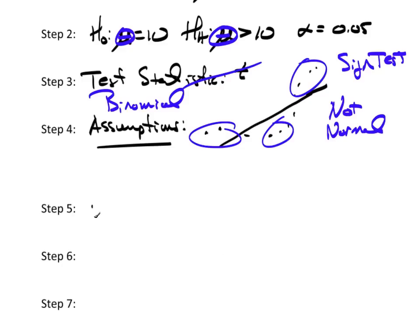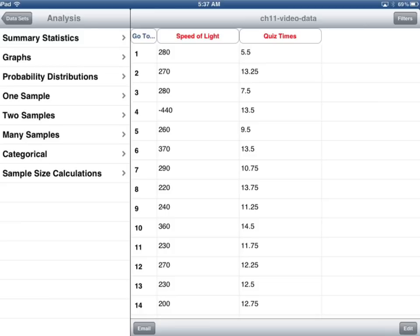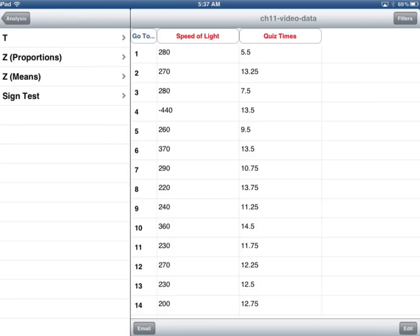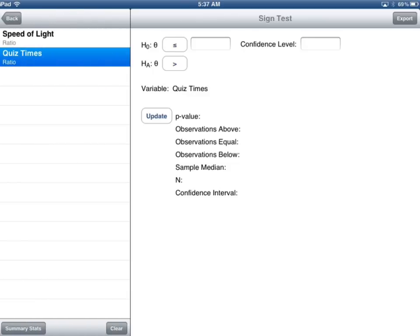So I'm going to walk through how to do this in TC stats, and then come back and explain a little bit more about what just happened. So what we need to do is find a p-value. And again, this is based on the sign test. So in TC stats, when I go to one sample, I see the sign test as an option.